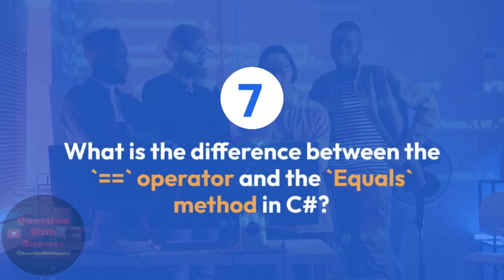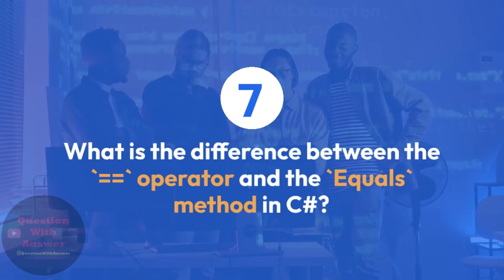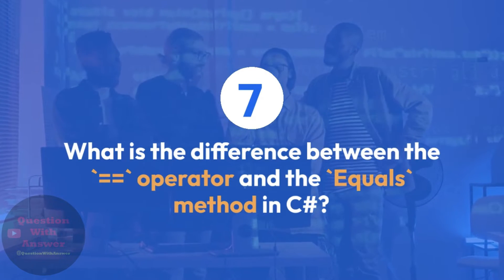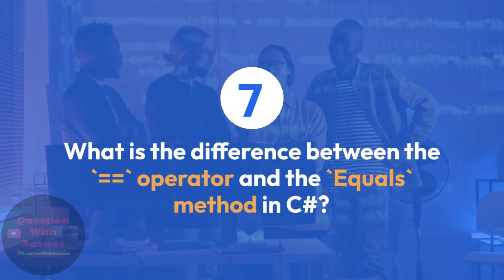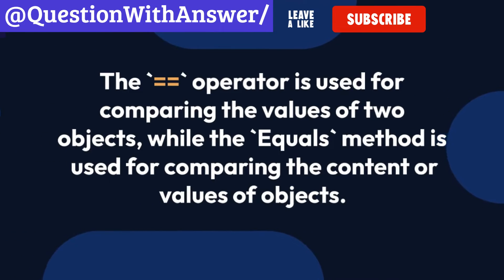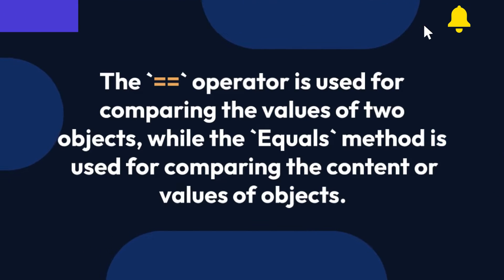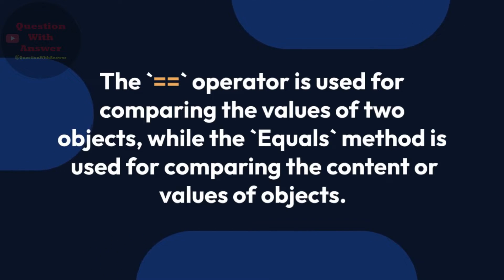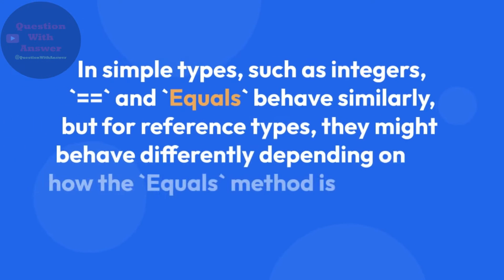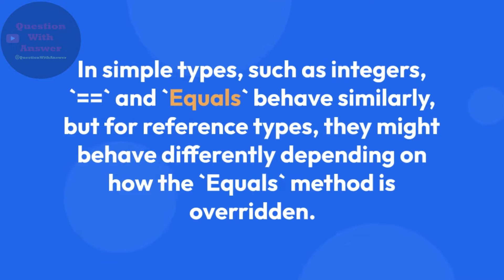Question 7: What is the difference between the == operator and the .Equals() method in C#? Answer: The == operator is used for comparing the values of two objects, while the .Equals() method is used for comparing the content or values of objects. In simple types such as integers, == and .Equals() behave similarly, but for reference types they might behave differently depending on how the .Equals() method is overridden.